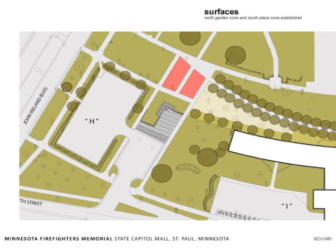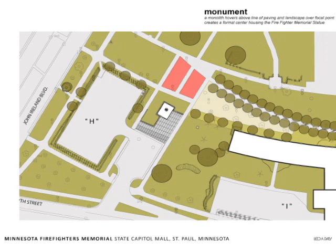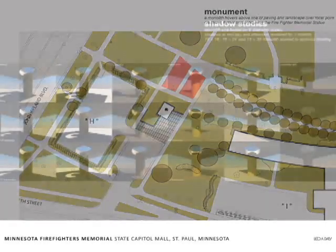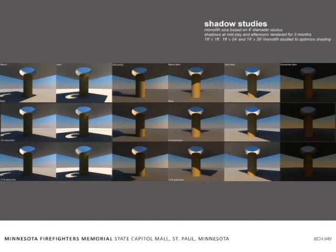The north garden zone and the south plaza zone are established using pavers in one area of the memorial site and green space or hardened ground in the northern area. This separates the site and gives the focal point for where gatherings would take place. The monolith hovers over the line of paving and landscape over the focal point and creates a formal center. The reason for the monolith is to evoke that feeling that firefighters get when they travel into the unknown. This will provide a shadow over the memorial site, and the hole in the top of the monolith — otherwise known as an oculus — is where the memorial statue will be positioned. This imagery shows all the work that our architects, Leo A. Daly, have done to understand how the sunlight gathered by the oculus will shine down and bathe the memorial statue in light.